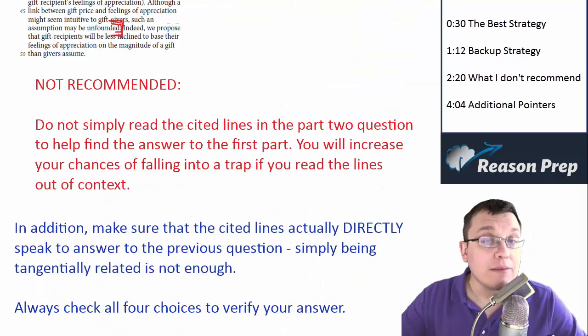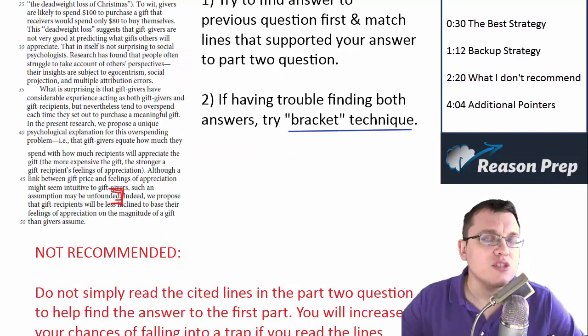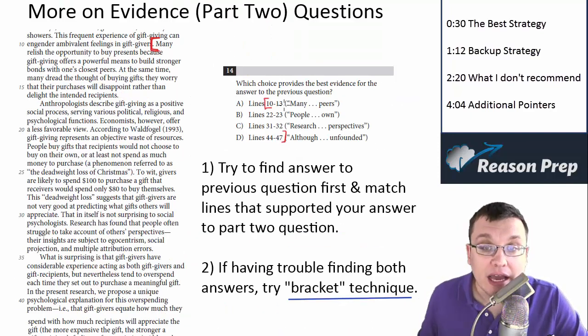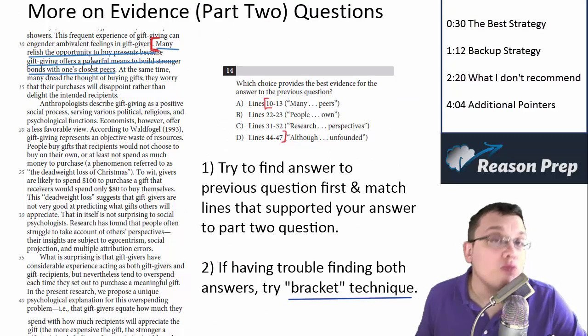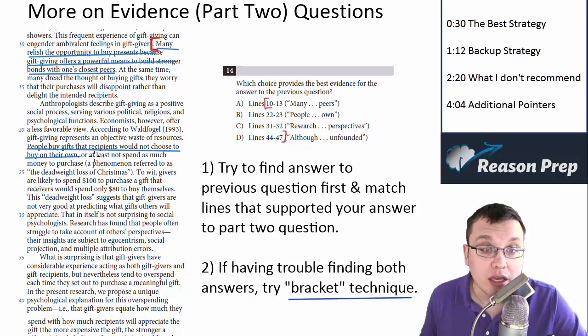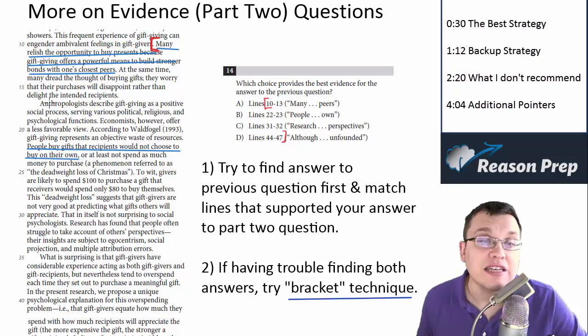What I do not recommend is simply reading the cited lines in the part two question to help you find the answer to the first part. You don't want to say 'okay, lines 10 to 13, let me underline those and read them out of context to see if it helps me answer question 13. Oh no, it didn't. Let me try lines 22 to 23 and see if that makes sense.' The problem with this approach is two things.